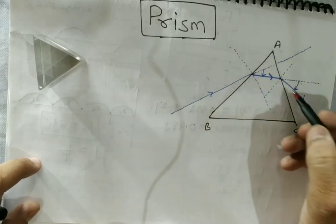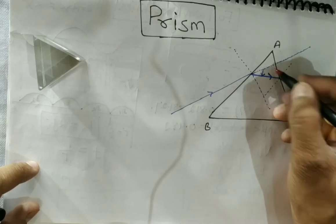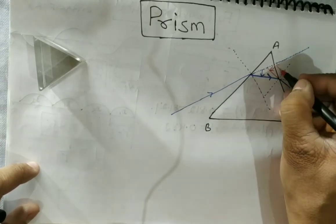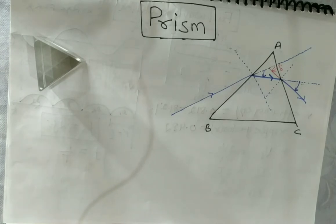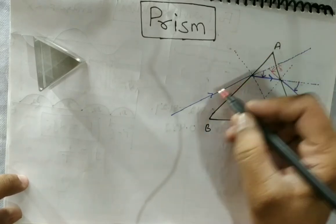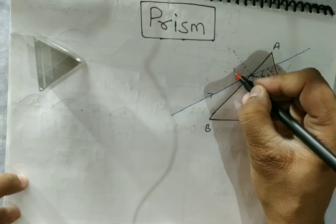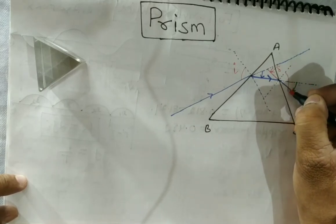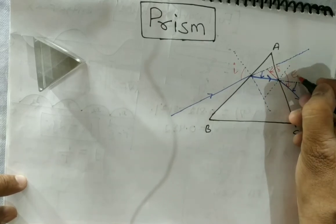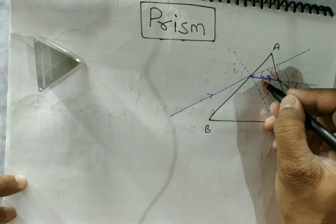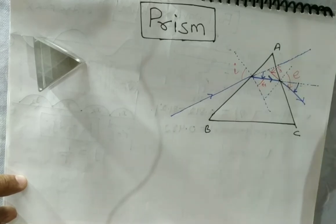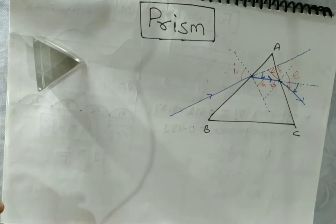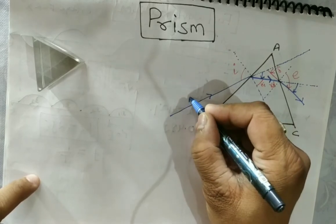The actual path before entering the prism was this, and this ray is going out. If I extend this line, this angle will be the total deviation produced by the prism. This angle between the normal and the incident ray is the incident angle i. This angle is the emergent angle e. The refracted angle at the first surface is r1 and the incident angle at the second surface is r2.